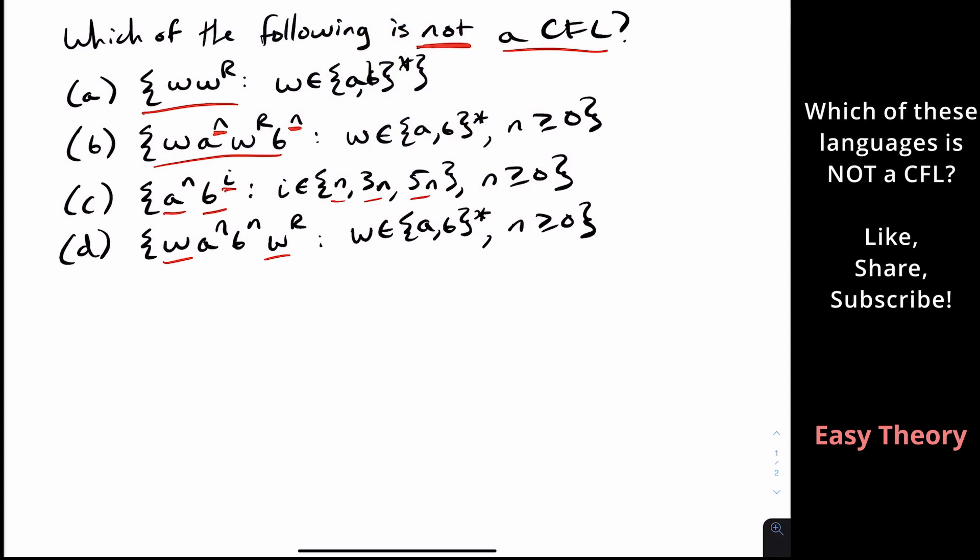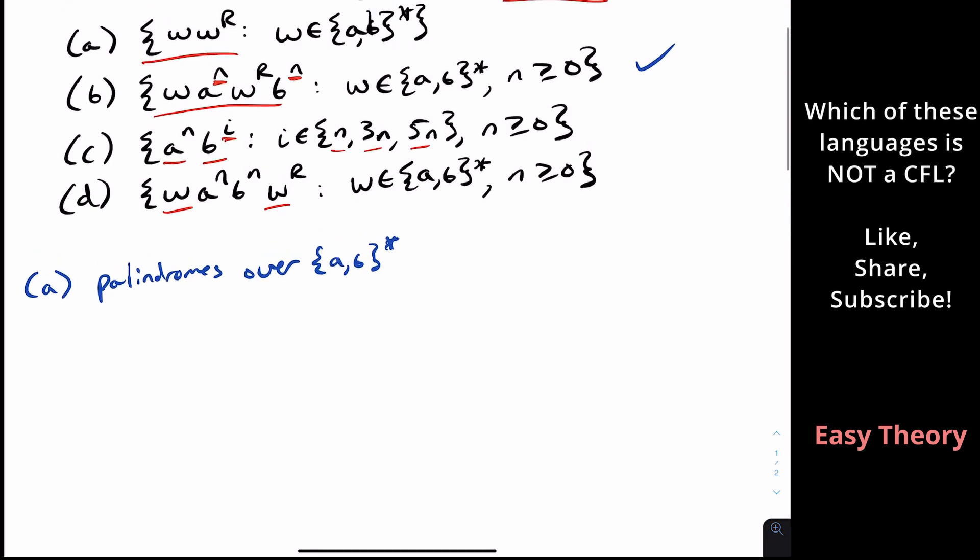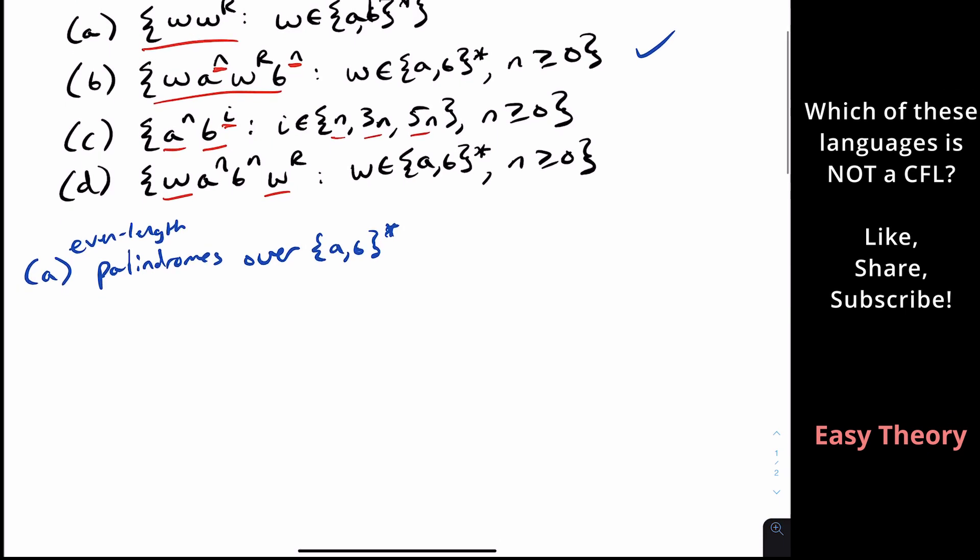So the answer is actually b. B is not context-free, and all of the others are context-free. Why are they all context-free? So let's look at A. So A is all the palindromes over the set AB. Actually AB star, a set of all palindromes, and not just palindromes, but even length palindromes.